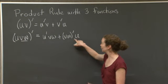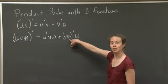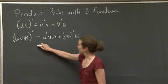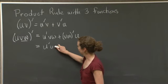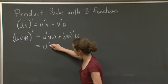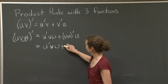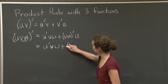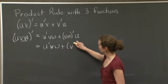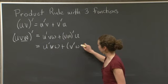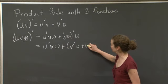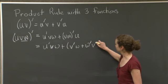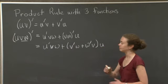But now, what do we do here? Well, we have a product rule for two functions, so let's use it. So I'll leave the first thing alone, u prime vw plus, now let's expand this. Take the derivative of the first function there, that's v prime. I leave the w alone, plus the derivative of the second function, that's w prime. I leave the v alone, and I keep the u there.